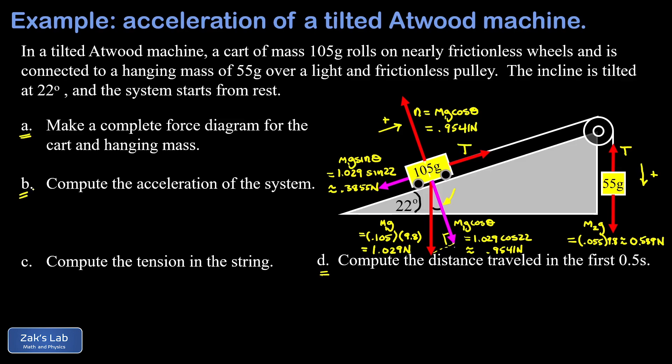We're getting into part B of the problem where we're asked to compute the acceleration of the system. What we do is apply Newton's second law to each moving piece, starting with the 105 gram piece. We've chosen a consistent coordinate system where up the ramp is positive for this guy. So we're going to call T positive and this parallel component of gravity negative. So minus 0.3855, and that's the net force, equal to the mass of the object, 0.105 kilograms, multiplied by its acceleration up the ramp.